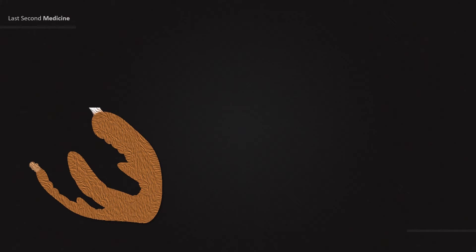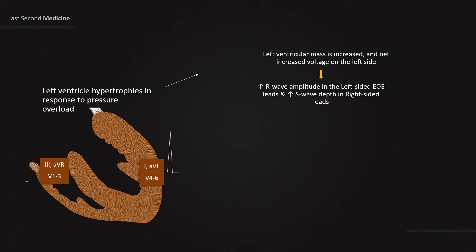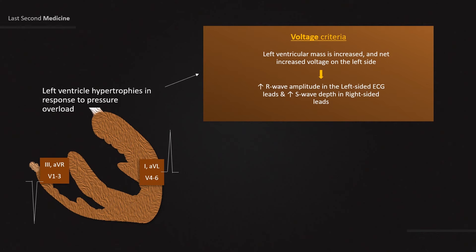First, a brief recap of the pathophysiology of ECG changes in left ventricular hypertrophy. The left ventricle hypertrophies in response to pressure overload, secondary to conditions such as hypertension and aortic stenosis. Left ventricular mass is increased, and there is net increased voltage on the left side compared to the right. This results in increased R-wave amplitude in the left-sided ECG leads — that is, lead I, AVL, and V4 to V6 — and increased S-wave depth in the right-sided leads, that is, lead III, AVR, and V1 to V3. This is the basis of voltage criteria of ECG for LVH.